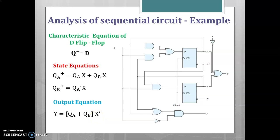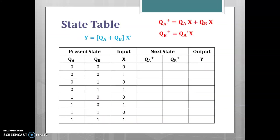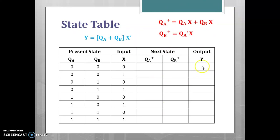Once all the equations are written, the next step is to draw and fill the state table. The state table consists of present state, input, next state, and output. There are two flip-flops, QA and QB, and input X — so three bits total, giving 2³ = 8 combinations from 000 to 111. Using the state equations and output equation, we fill the state table.